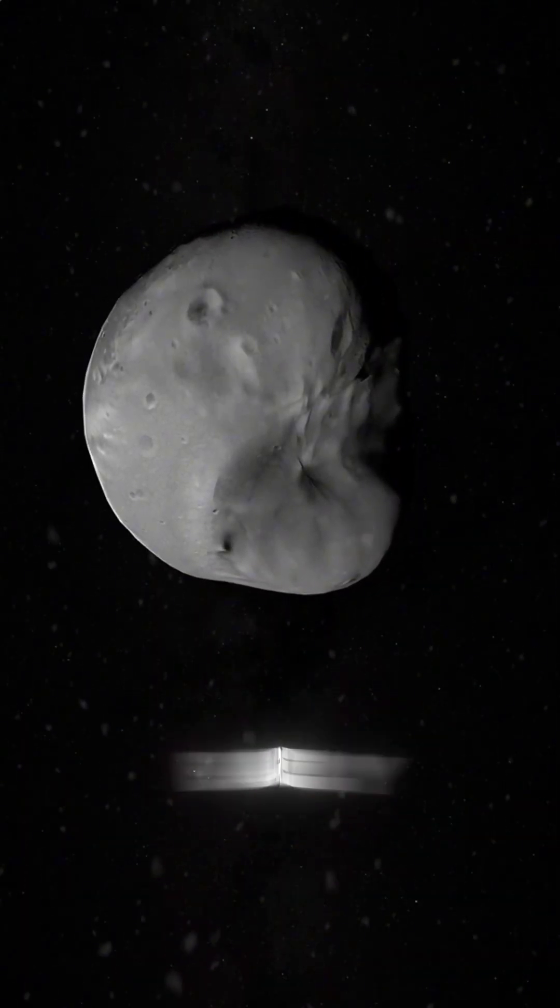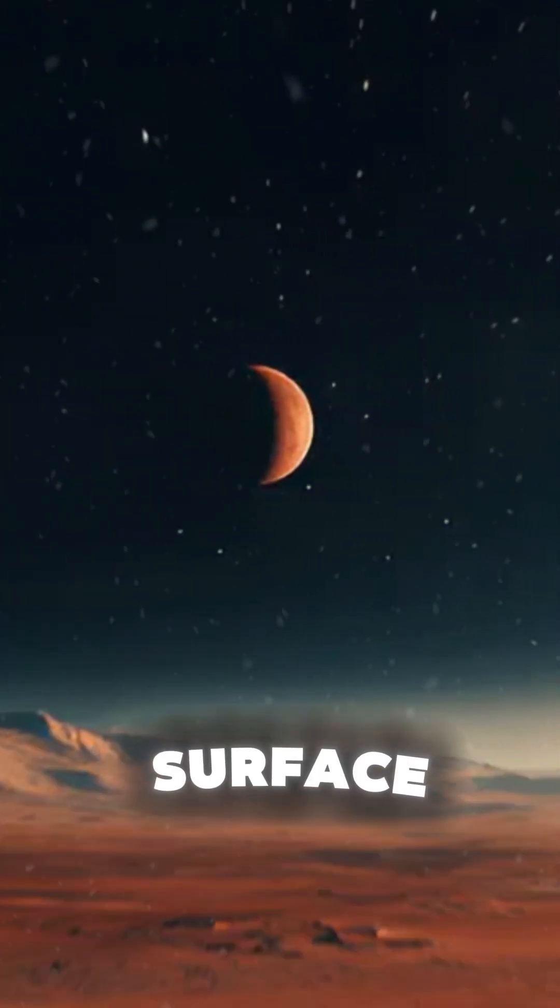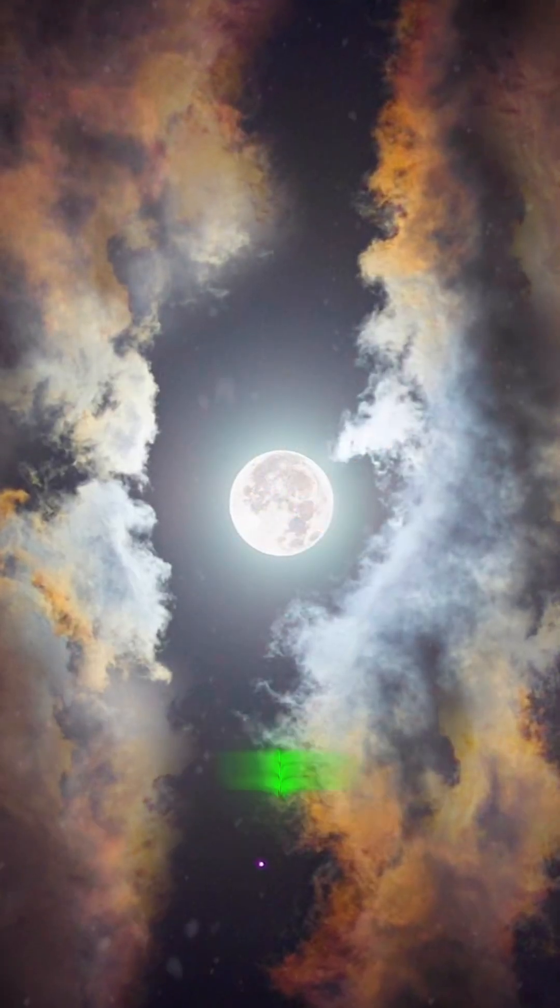It's so small and distant that it barely looks like a moon from Mars' surface. Think of it more like a faint star, not the luminous moon we're used to on Earth.